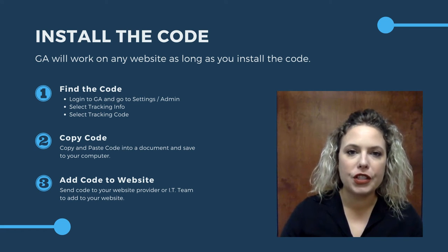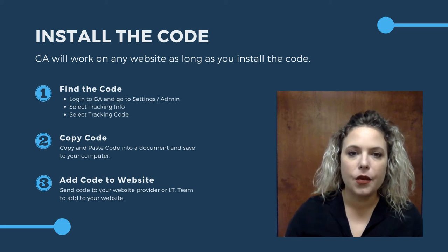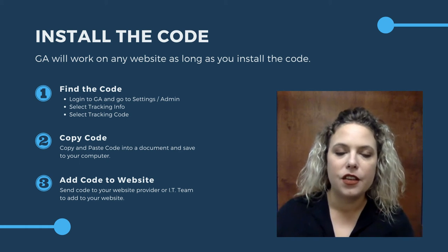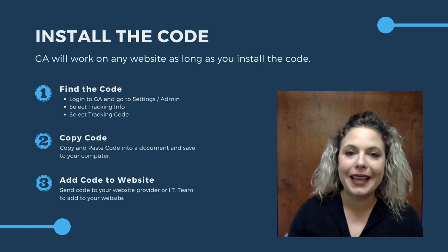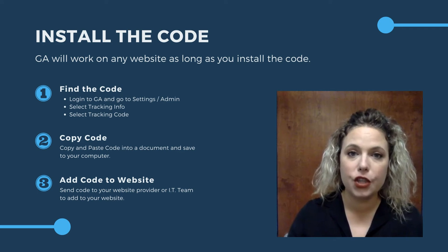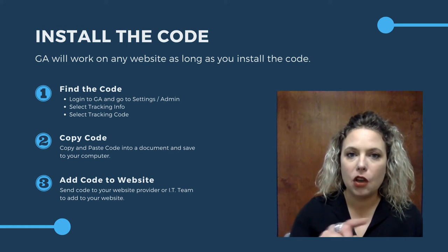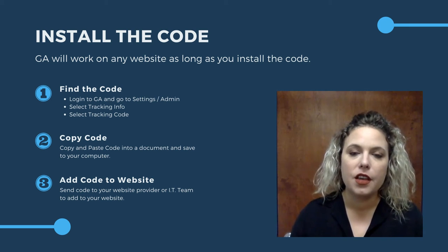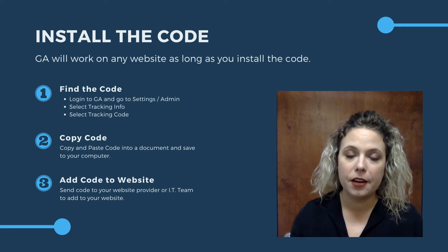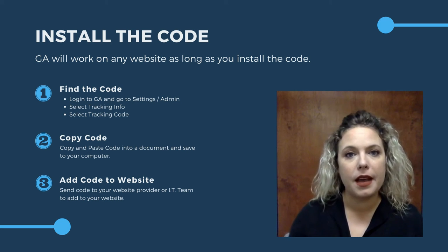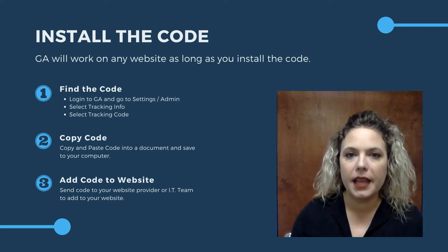In order to install the code onto your website, we've got to start in Google Analytics. Log into your account to find the code. You're going to log into GA, go to Settings, and then go to Admin. You'll then be able to select the button called Tracking Info, and then select Tracking Code. This is going to pop up a screen that shows you the UTM code — it's going to be a long line of code — and you're basically just going to copy and paste it into a document on your desktop in order to send it to your website provider or the owner of your Google Analytics account, should it already exist, which would probably be either your digital advertiser or your website provider.